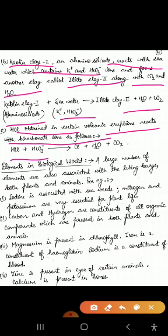Water and clay react under high temperature to form igneous rocks. So oceans and seas also form a major source of elements. Now, elements in the biological world — a large number of elements are present in living beings, both plants and animals.